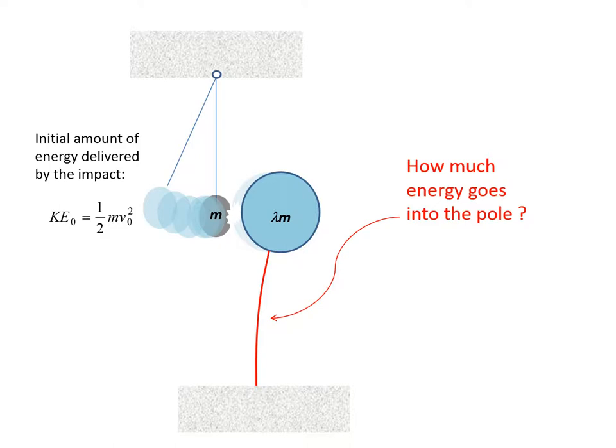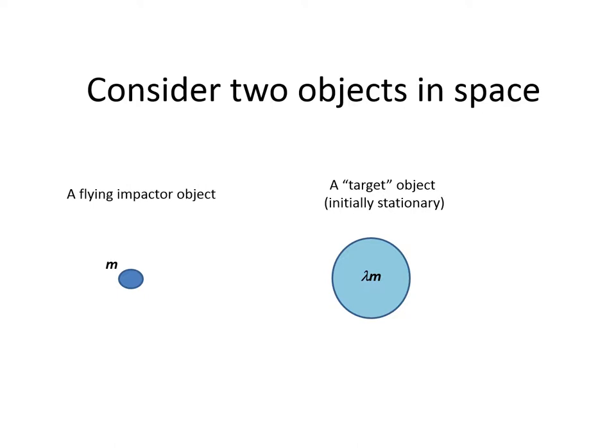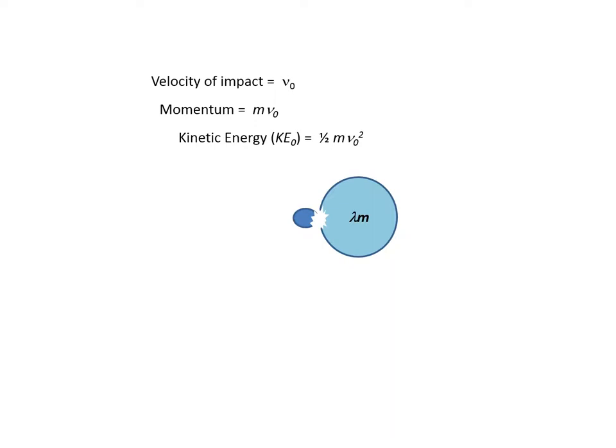Consider two objects in space. The flying impactor object has mass m and the target which is initially stationary has mass lambda m. As the impactor moves and collides with the target, it has velocity of impact V naught, momentum mV naught, and kinetic energy half mV naught squared.